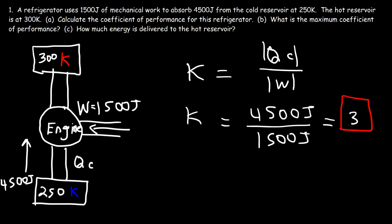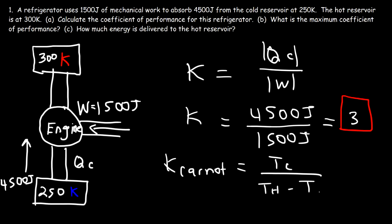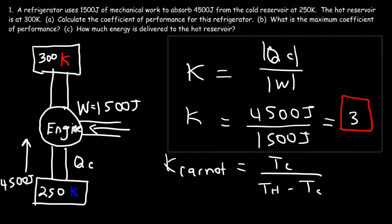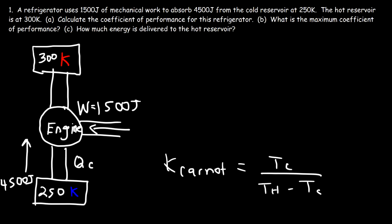Now part B: what is the maximum coefficient of performance — that is, for an ideal Carnot refrigerator? The formula is TC divided by (TH minus TC), and the temperatures must be in Kelvin. If you have temperatures in Celsius, make sure to add 273.